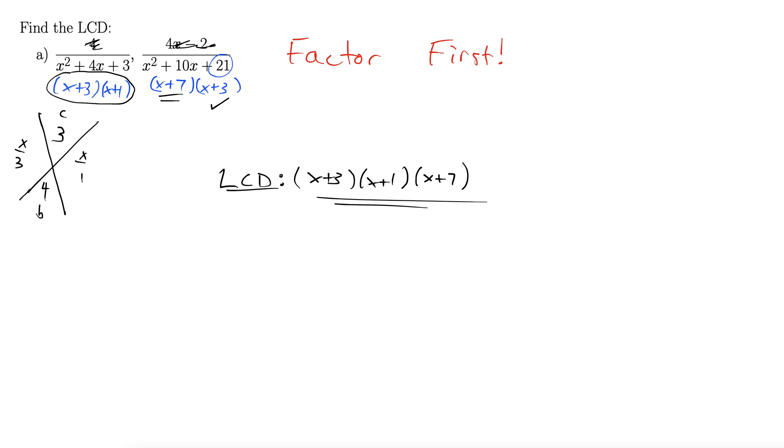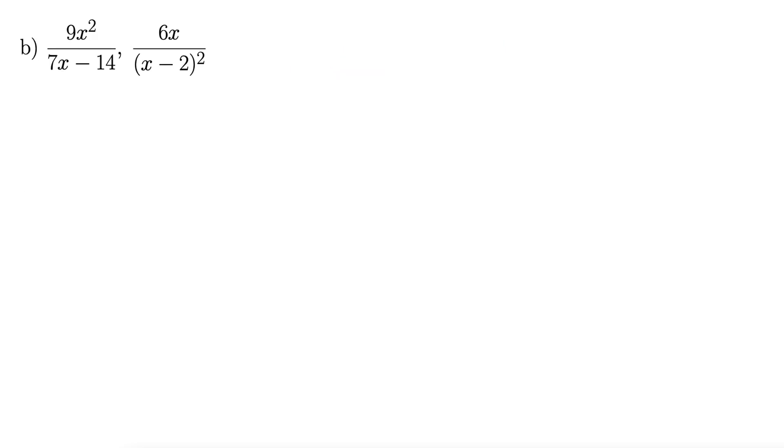Let's try another one of these. In this example, we have 9x squared divided by 7x minus 14 and 6x divided by x minus 2 squared. Our goal is to find the least common denominator.